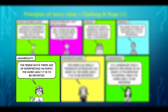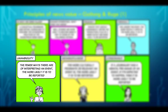Unambiguity. The fewer ways there are of interpreting an event, the more likely it is to be reported. Reporters have to cover a lot of different subjects and they cannot be experts in all subjects. Unfortunately, in places like Malta, expertise and specialization is very difficult, and therefore most journalists are a sort of jack-of-all-trades. So if the event is quite clear to understand, there is the possibility that reporters will report it more faithfully, and it will be chosen for reporting because it can be understood by the newsroom and the journalists.